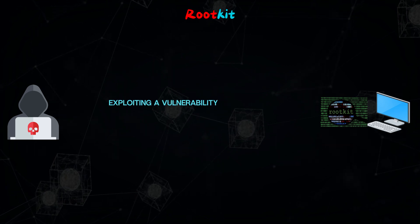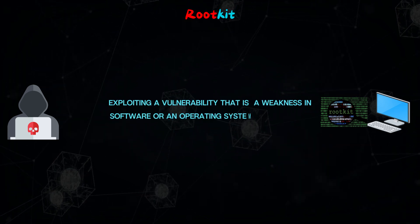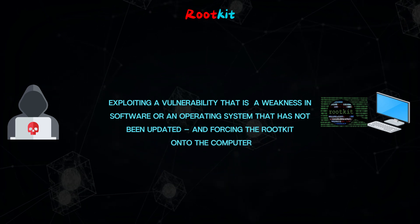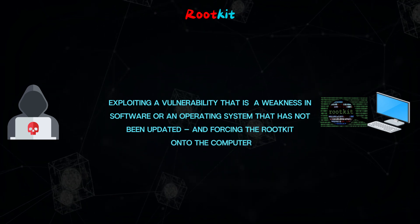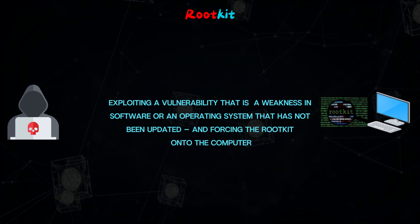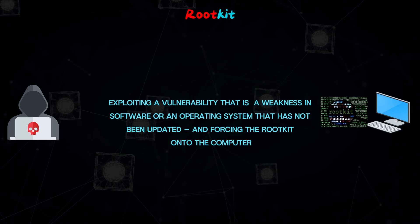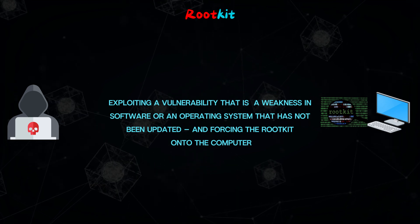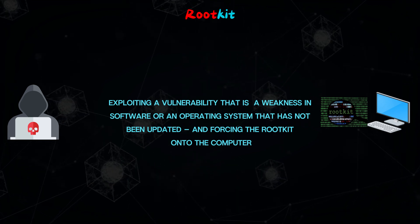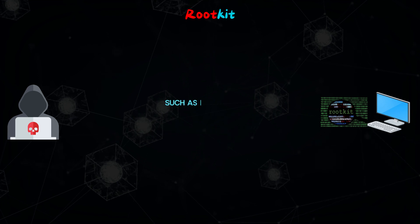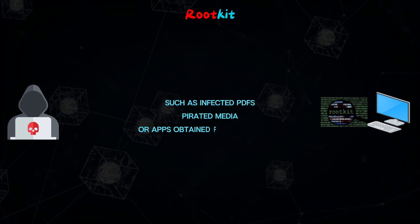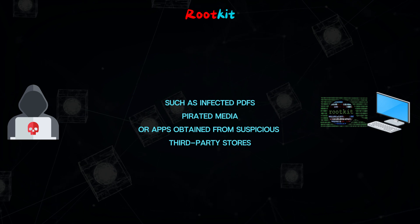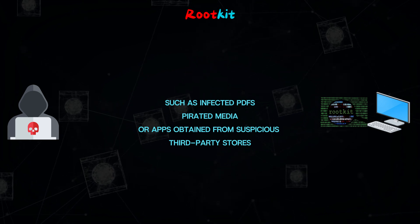Another way is through exploiting a vulnerability — that is, a weakness in software or an operating system that has not been updated — and forcing the rootkit onto the computer. Malware can also be bundled with other files, such as infected PDFs, pirated media, or apps obtained from suspicious third-party stores.